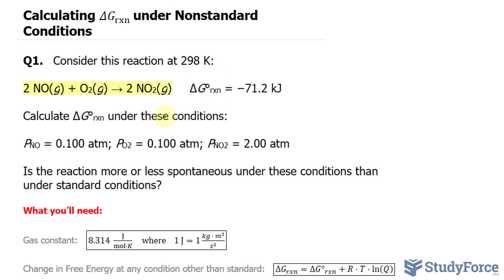Now we're expected to calculate delta G under these new conditions. Is the reaction more or less spontaneous under these conditions than under the standard conditions?